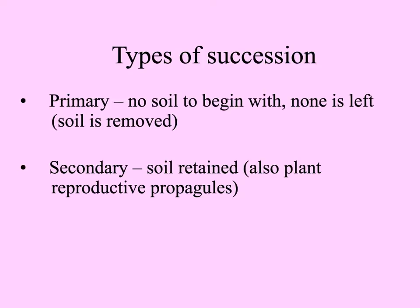Another way of looking at primary versus secondary succession is that primary succession starts with no soil present. There may have been some in the past, but none is left — burned away by volcanic lava or on brand new land emerged from the sea. Secondary succession is that in which soil is retained, which also contains plant reproductive propagules — seeds, rhizomes, and other things.